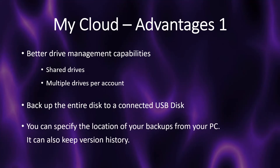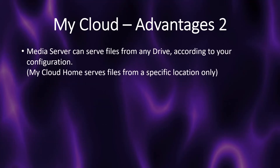With MyCloud, you can specify where to store your backups from your PC folders, and it can keep version history. MyCloud Home, instead, takes backups where it wants and without version history. The MyCloud media server can serve files from any drive if you allow it — you cannot choose specific folders, but you can choose which drives to look for media files. MyCloud Home serves files from a specific location only, and you have to put all your media files in a specific location for the media server in order for your smart TV to see them.